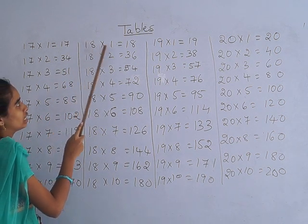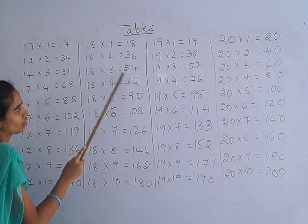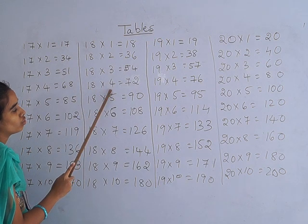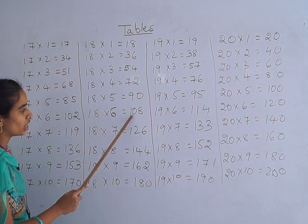So 18th. 18 ones are 18, 18 twos are 36, 18 threes are 54, 18 fours are 72, 18 fives are 90, 18 sixes are 108.